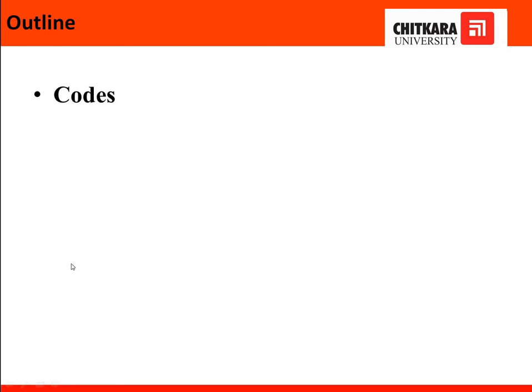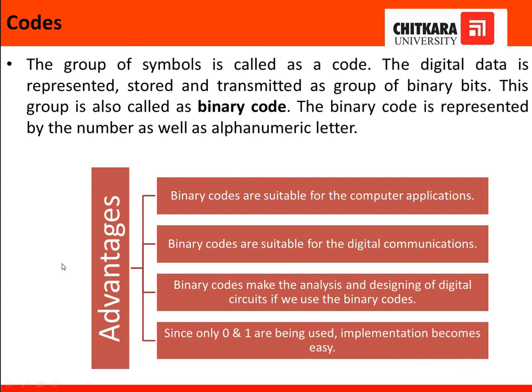Hello everyone, in today's class we will be having a discussion on codes. So codes is nothing but it is a group of symbols. If you just send the data in the form of group of bits, then we called it as a code. The data is in the form of 1 and 0, that's why we called it as binary codes. Sometimes it is denoted by the alphanumeric letters, that is A, B or any other.